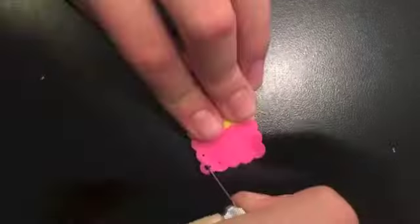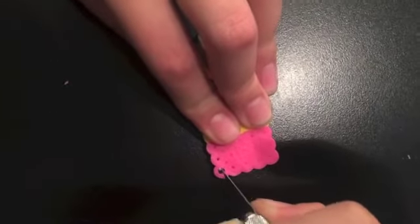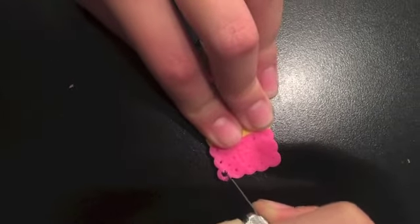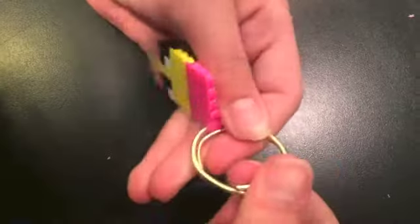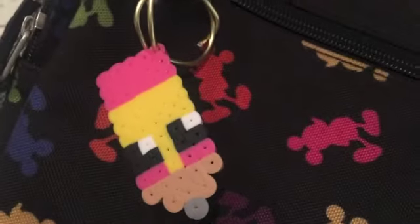Now ask an adult or someone that knows how to use an iron to iron your perler bead creation. Then take an exacto knife and make one of the holes on one of the sides a little bit bigger so you can thread your wire through. That's it! Now put it onto your backpack, and people are going to ask where to get this, but be like, 'I made it!'